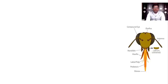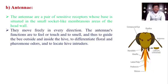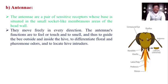The next important organ of the head is the antennae. The antennae are a pair of sensitive receptors whose base is situated in a small socket-like membrane area on the head wall. They move freely in every direction. The antennae's functions include feeling or touching, smelling, guiding the bees outside and inside the hive, differentiating floral and pheromone odors, and locating the hive. There are numerous sensory nodes on the antennae directly connected with the brain, making them very sensitive.